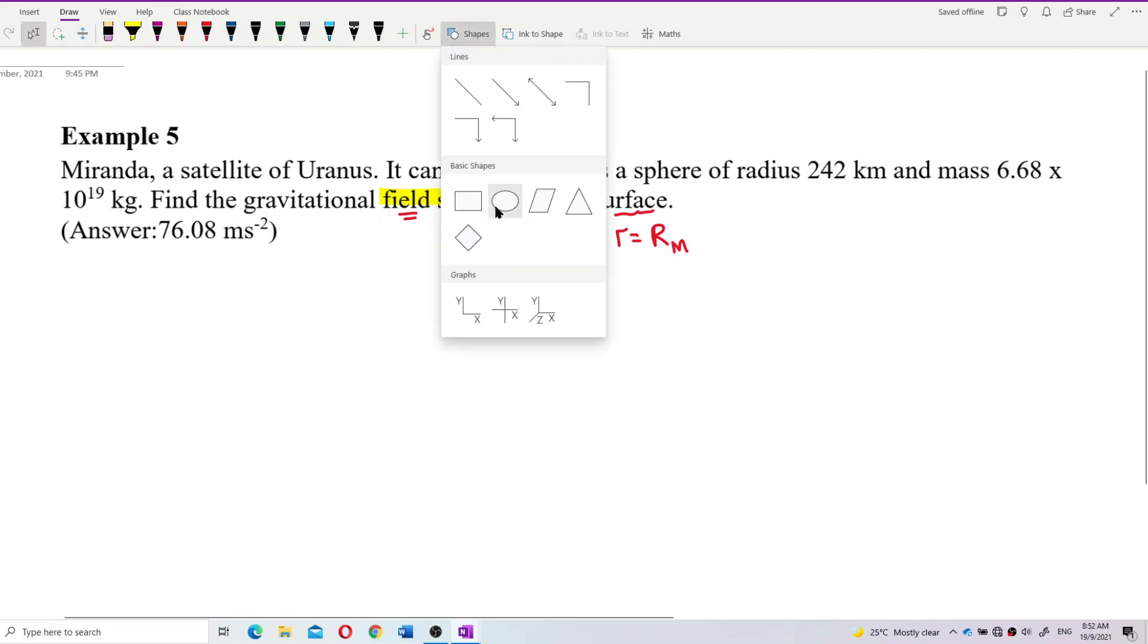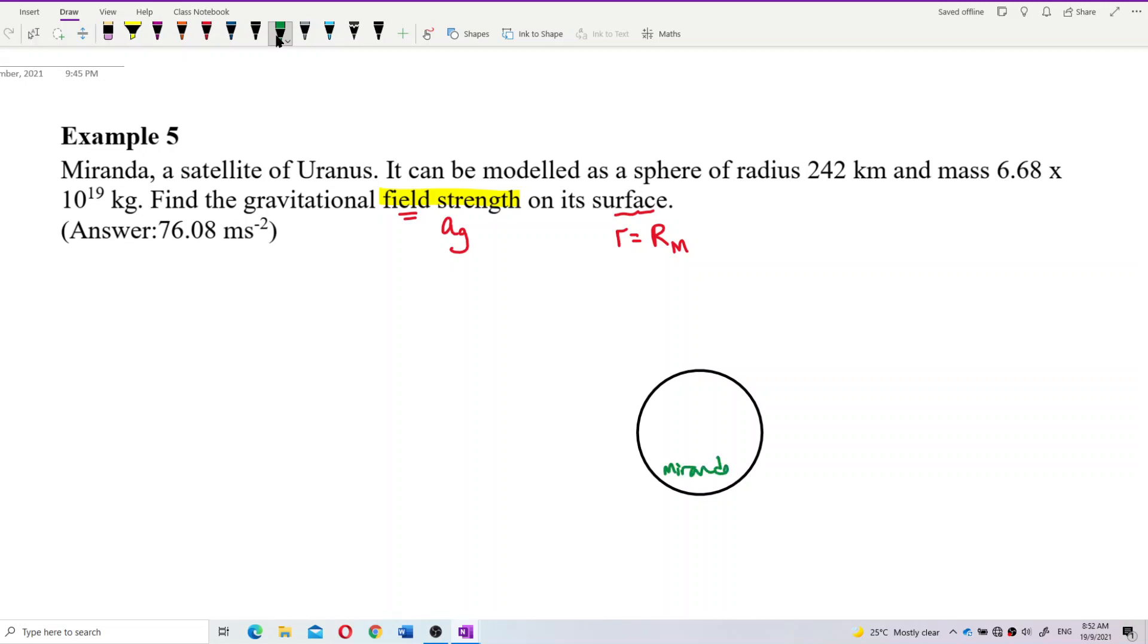Alright, let me draw it out. So, this is the Miranda. Now we want to find the field strength at the surface. At the surface here.